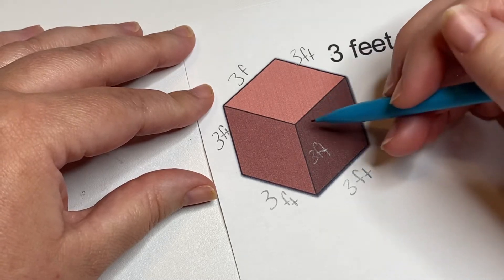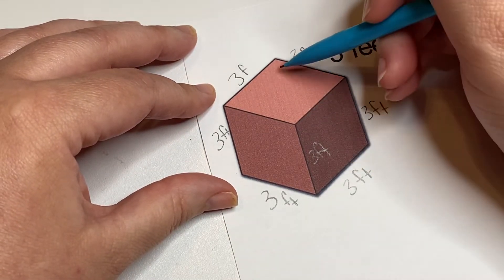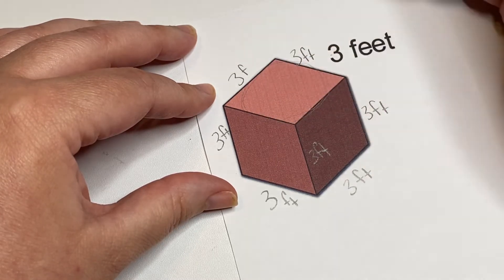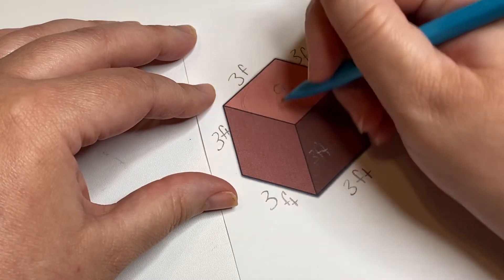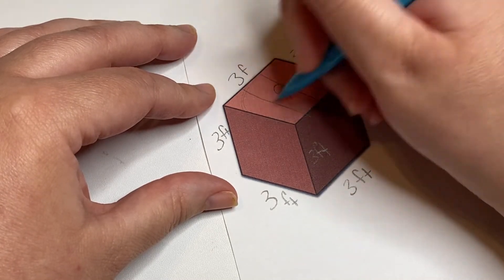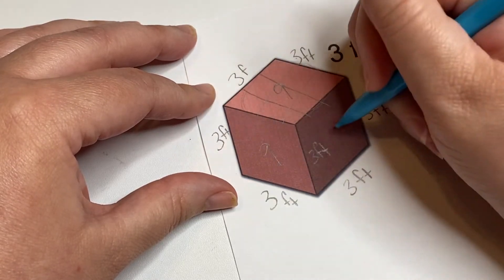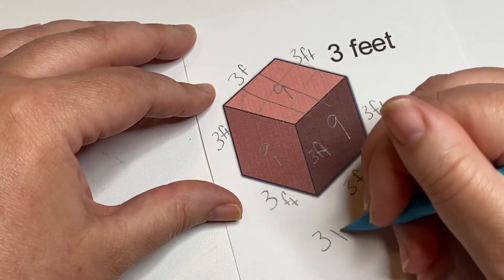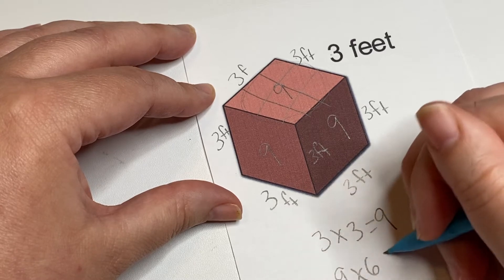So what we have to do, similar to what we did yesterday, is we need to find the surface area of this one square. So three times three is nine. If we cut this like this we would get nine squares, so we have nine, nine, nine, and then the three we can't see. So we did 3 × 3 = 9, and 9 × 6 = 54.